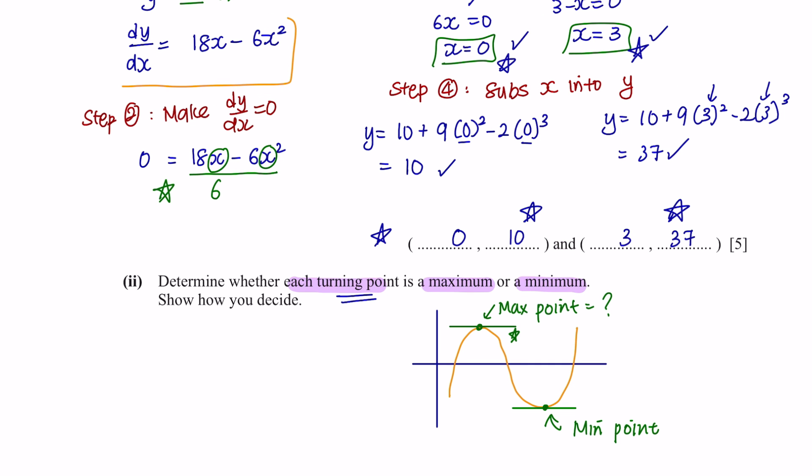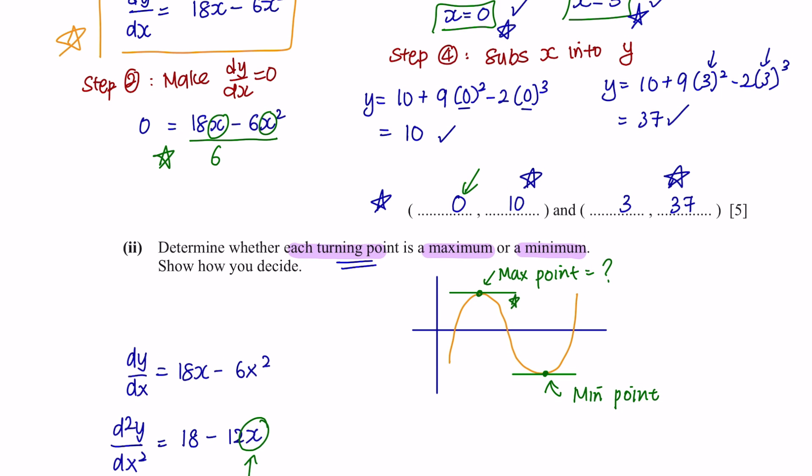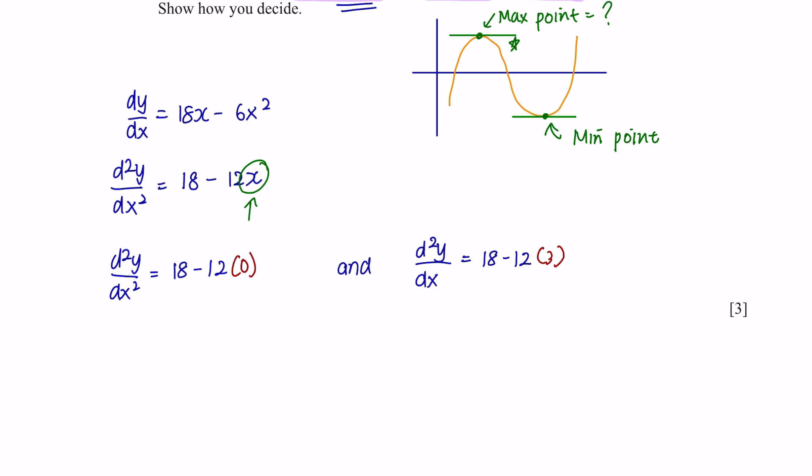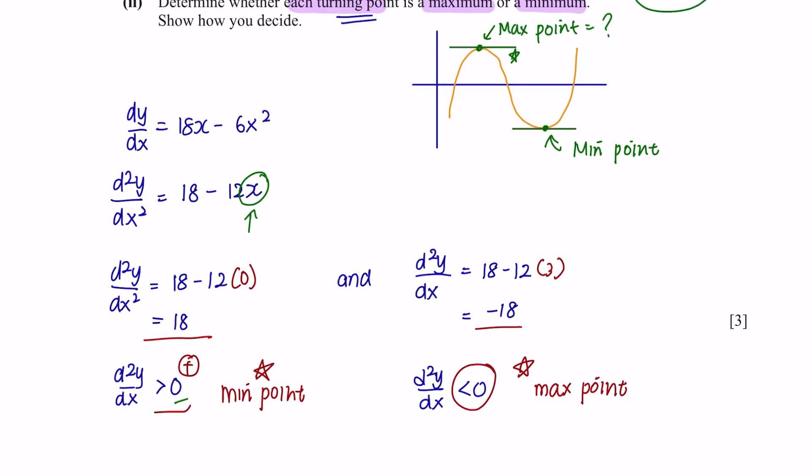To do this, we're going to differentiate this equation one more time. And we're going to substitute x with the coordinate from each turning point, which is 0 and 3. And we will get 18 and negative 18. If the value here is positive, then the stationary point is a minimum point. And if the value is negative, then the stationary point is a maximum point. So this means that the coordinate (0, 10) is a minimum point and (3, 37) is the maximum point.